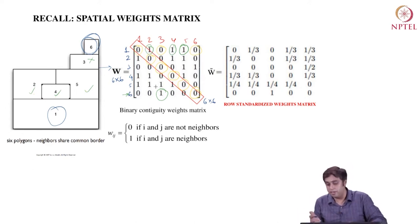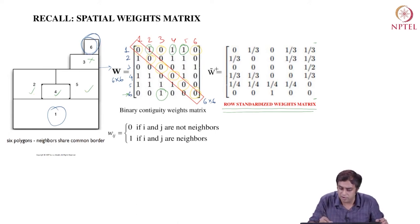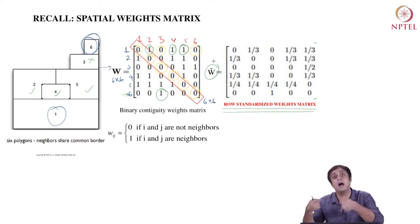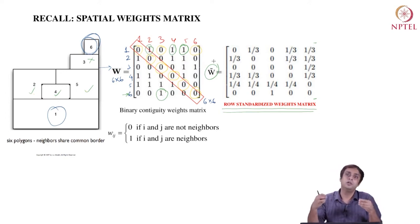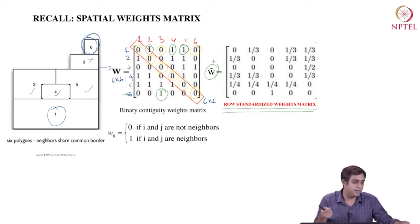Something we also discussed at length earlier was the row standardization of these weights matrices, and why that is absolutely a critical idea. Going forward, every time we see W, I actually imply W-tilde — that is, I am always implying the use of a row-standardized weights matrix. We cannot use the raw weights matrix. It's a good homework exercise to go back and review the previous lectures to understand why row standardization is a very critical entity.